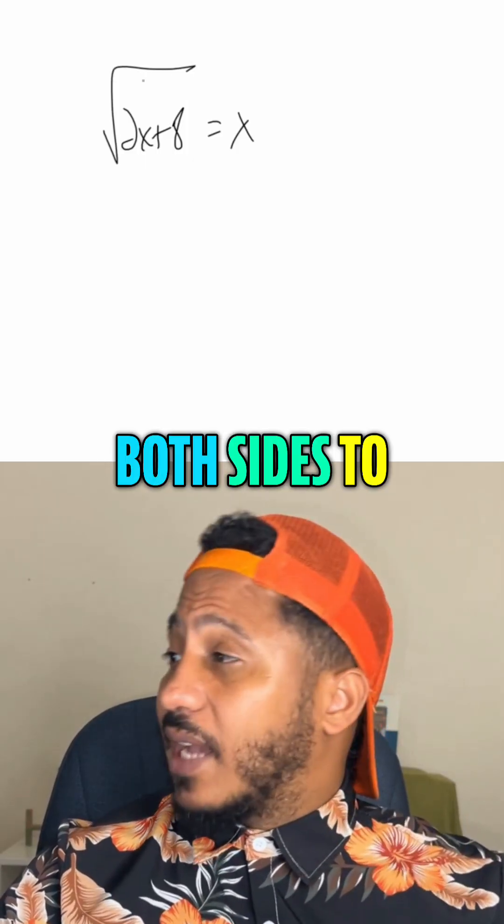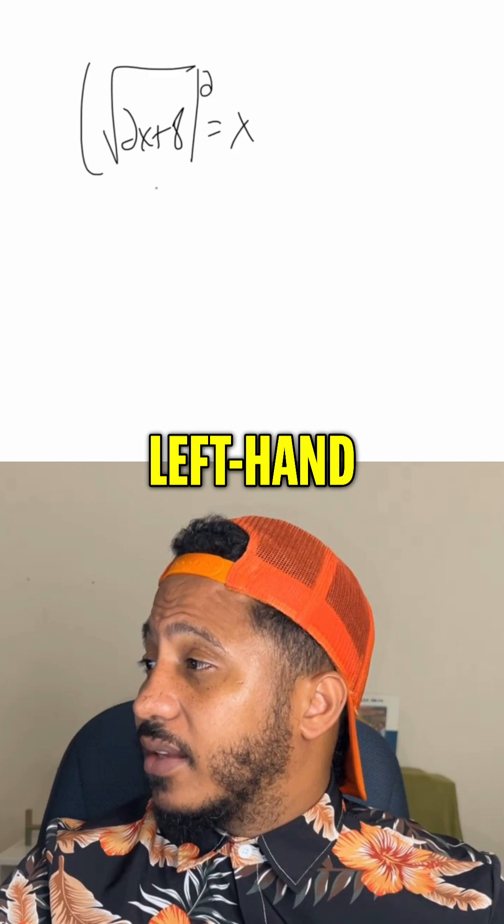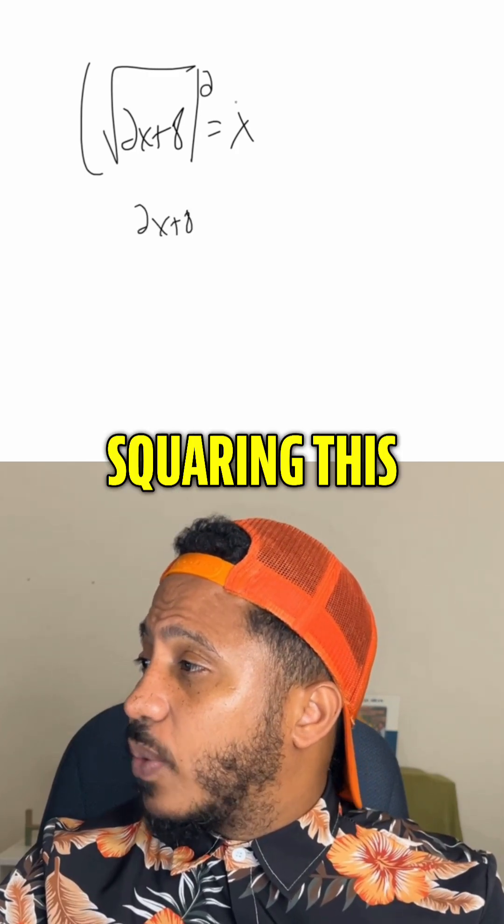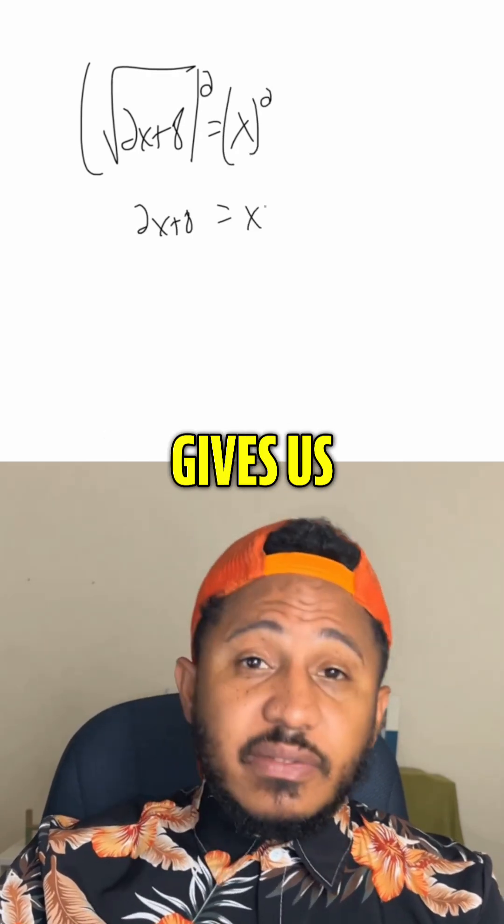So how we solve this one is by first squaring both sides to get rid of that radical. So we square the left-hand side, we get 2x plus 8. Squaring the right-hand side, that just gives us x squared.